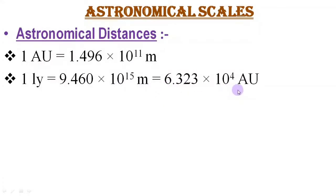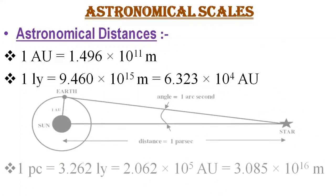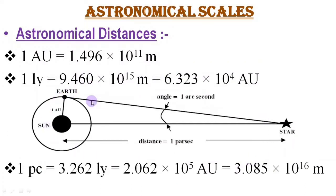In terms of Astronomical Unit, one Light Year is equal to 6.323 × 10⁴ Astronomical Units. We have another bigger unit regarding this context, which is called Parsec. One Parsec is defined as the distance at which the radius of Earth's orbit subtends an angle of one arc second. To analyze this, we consider this picture. Here, the radius of the Earth's orbit subtends an angle of one arc second for this distance. This distance is called Parsec.